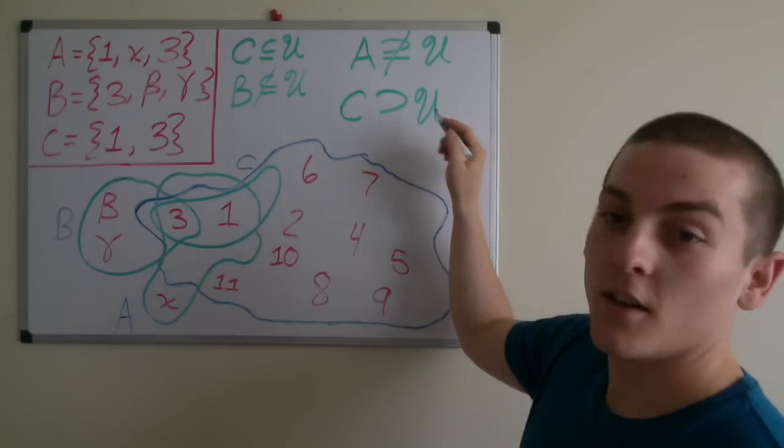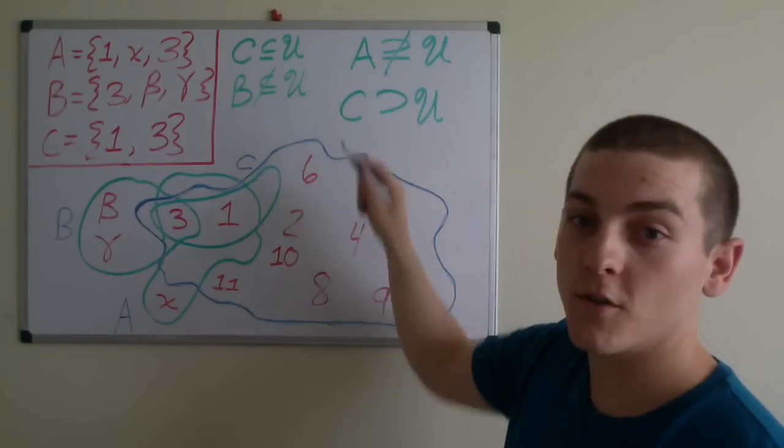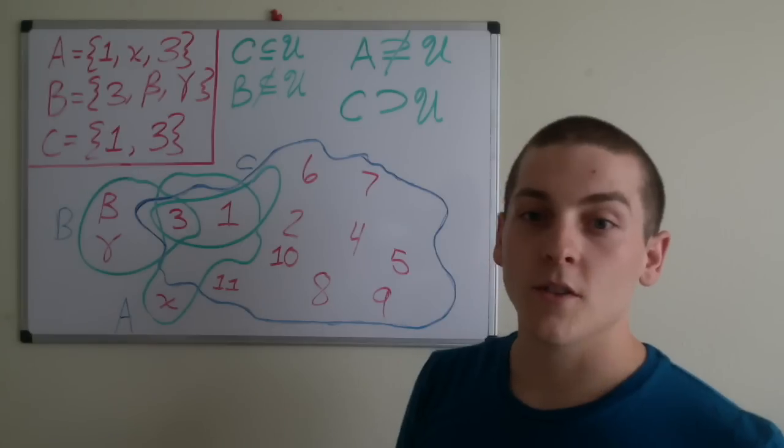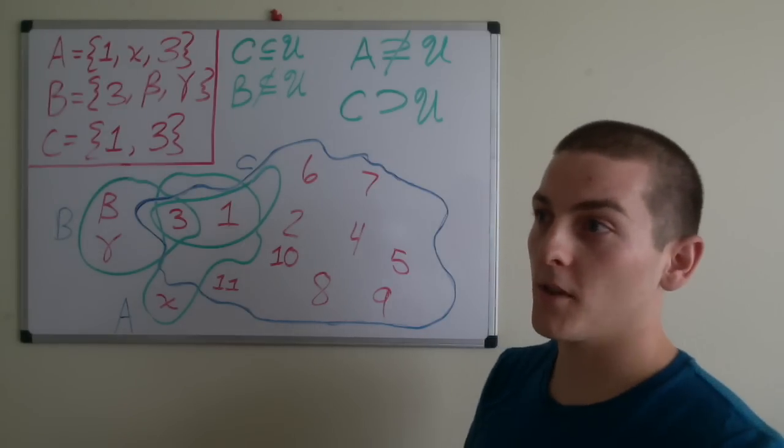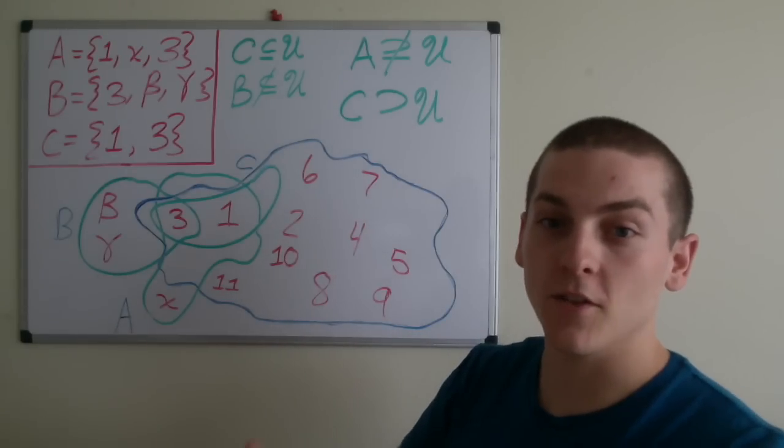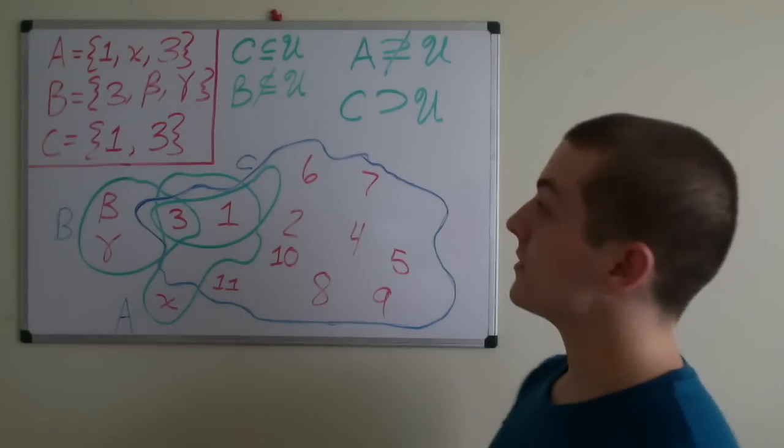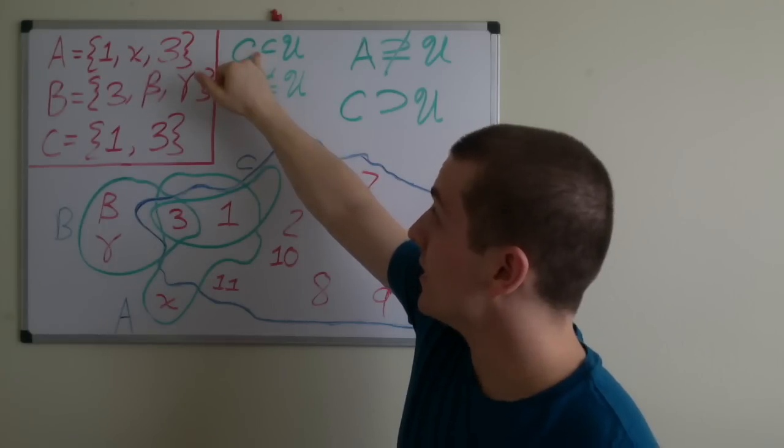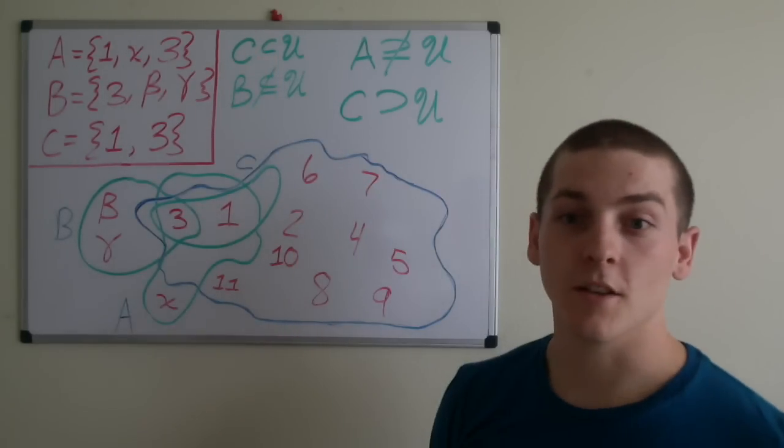And finally, we can say that the universe is a proper superset of C because the universe contains all elements of C and there are elements within the universe that are not within the set C. So if we wanted to be more specific, we could actually say that C is a proper subset of the universe.